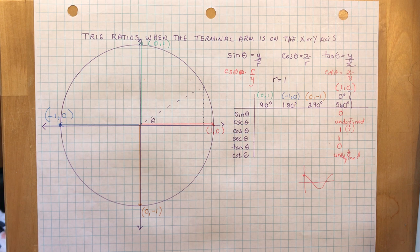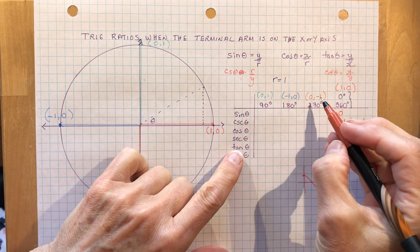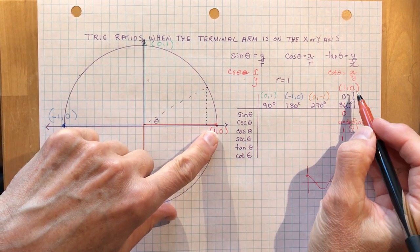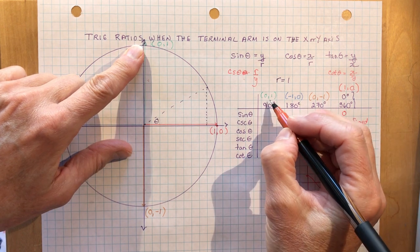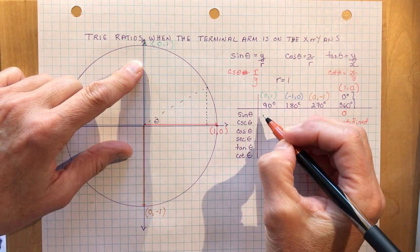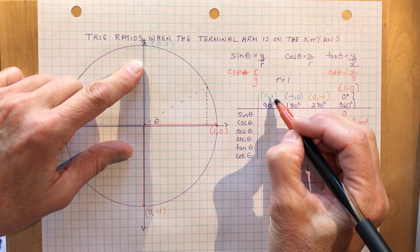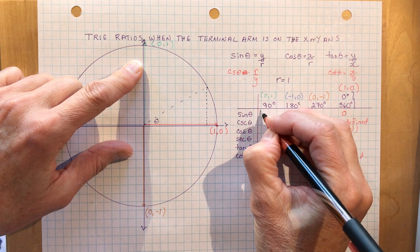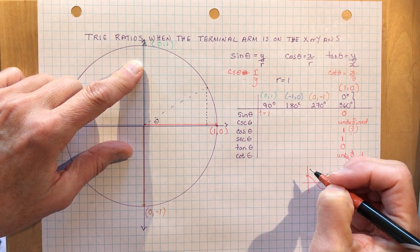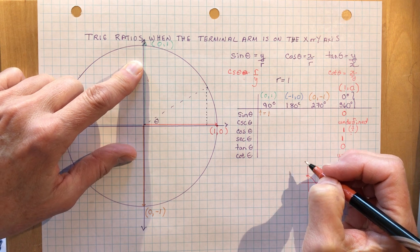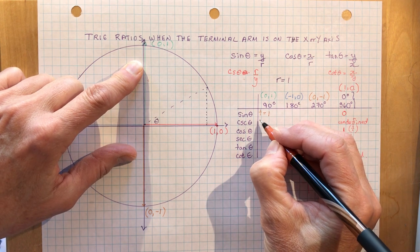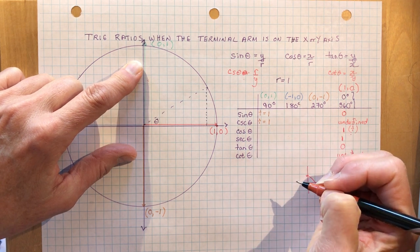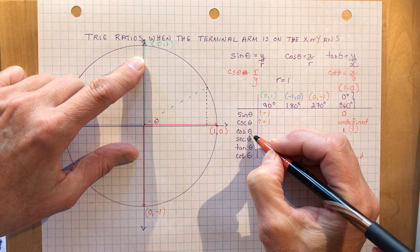Let's go around the circle to 90 degrees. At 90 degrees, the sine is Y over R: Y is 1, R is 1, so 1 over 1 is 1. The cosecant is going to be 1 over 1 again — if I flip 1 over 1, I still have 1 over 1, so that's still 1.